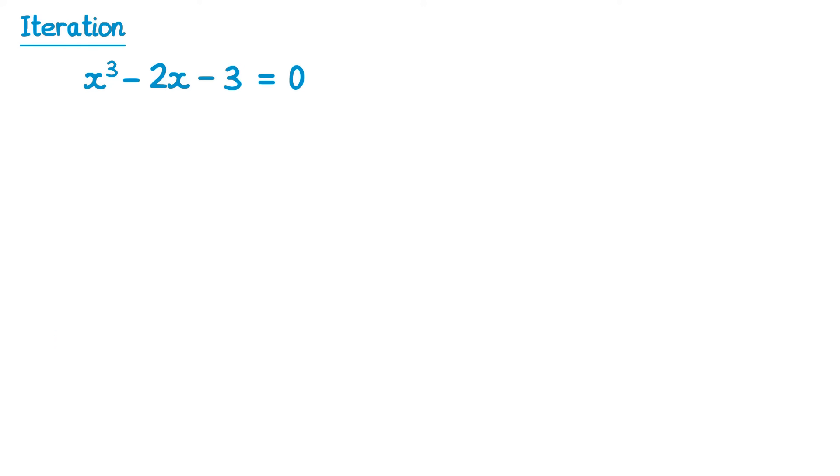Now that we know a solution lies between 1 and 2, we can use iteration to find this solution really accurately. The first thing we're going to do is imagine we were asked to make this x the subject, so we're going to rearrange it so that x is on the left hand side. To begin we're going to add 2x and 3 to both sides. If we add this to the left hand side, it cancels out the negative 2x and negative 3, so we're just left with x cubed.